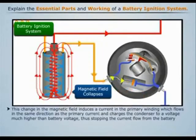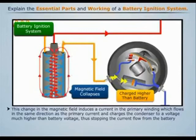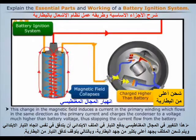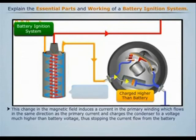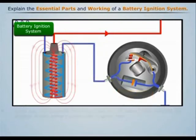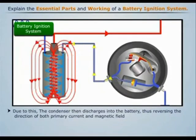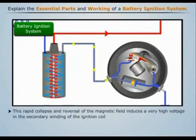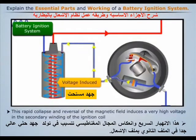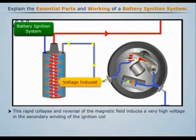This change in the magnetic field induces a current in the primary winding, which flows in the same direction as the primary current and charges the condenser to a voltage much higher than battery voltage, thus stopping the current flow from the battery. Due to this, the condenser then discharges into the battery, reversing the direction of both the primary current and the magnetic field. This rapid collapse and reversal of the magnetic field induces a very high voltage in the secondary winding of the ignition coil.